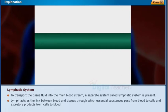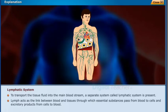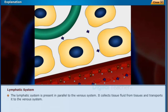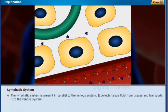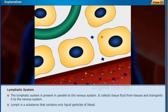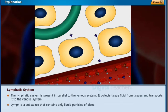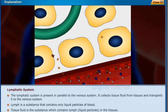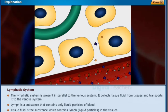The lymphatic system is present in parallel to the venous system. It collects tissue fluid from tissues and transports it to the venous system. Lymph is a substance that contains only the liquid particles of blood. Tissue fluid is the substance which contains lymph and liquid particles in the tissues.